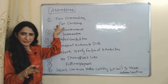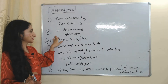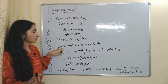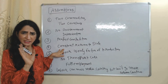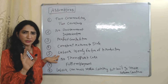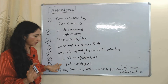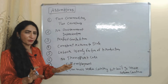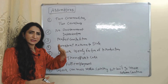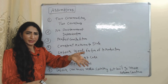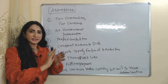The assumptions of this theory are: two commodities, two countries, no government intervention, perfect competition, constant return to scale — meaning change in output is the same as change in input — labor is the only factor of production, no transport cost, full employment, and labor can move within a country but cannot move between countries.